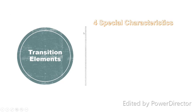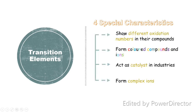Now we move to the most important part of this subtopic. Transition elements have 4 special characteristics. Most transition elements show different oxidation numbers in their compounds. They can form colored compounds and ions. They can act as catalysts in industries. And they will form complex ions. You should memorize these 4 special characteristics with examples.